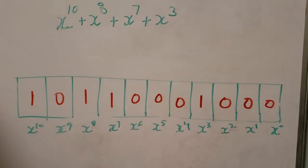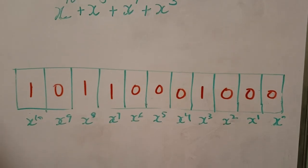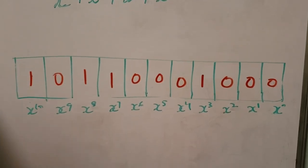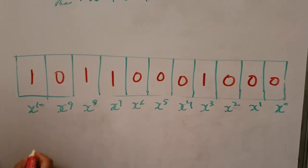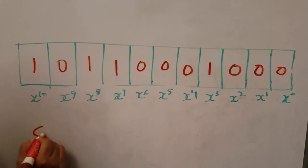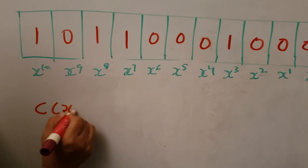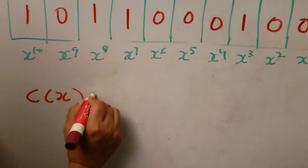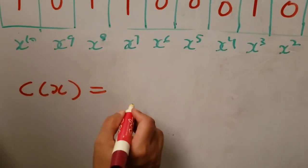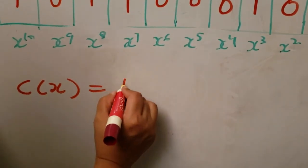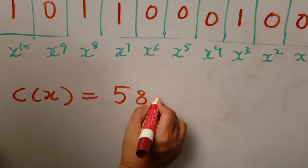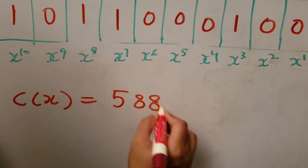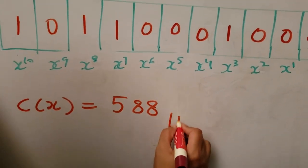So let's change these binary numbers into a hexadecimal number. c(x) is equal to 0x588 hex.